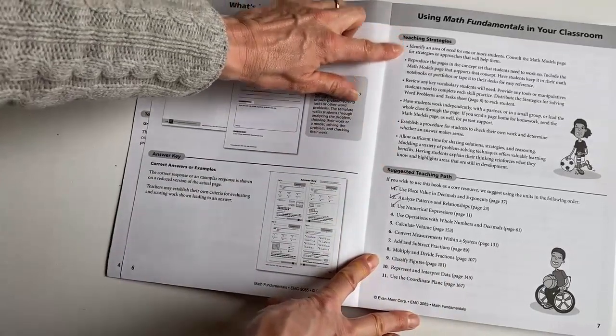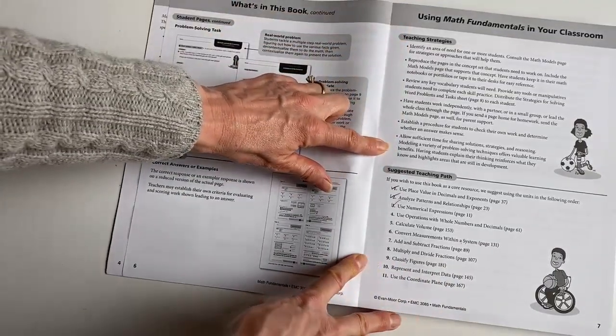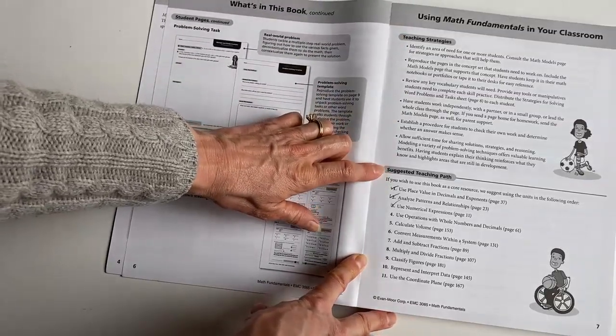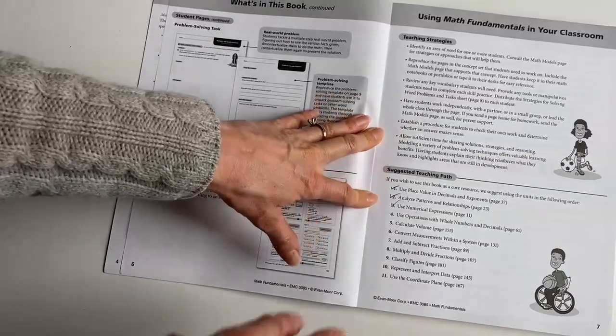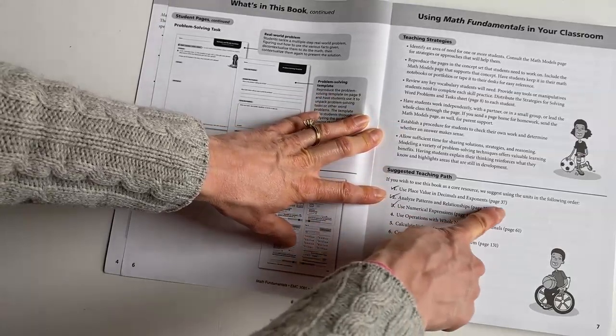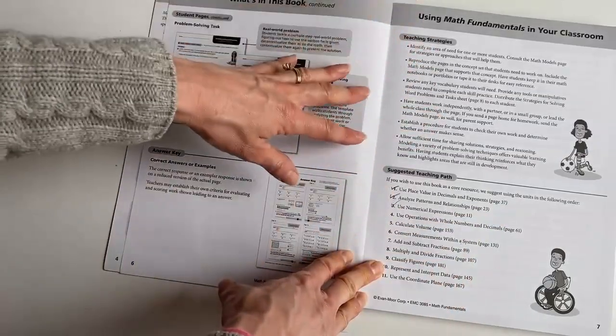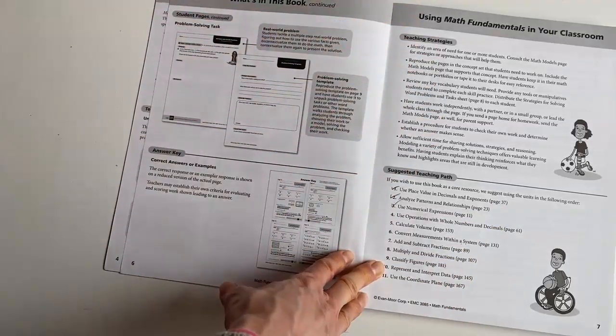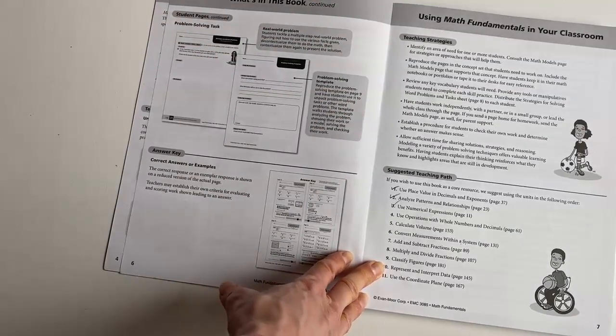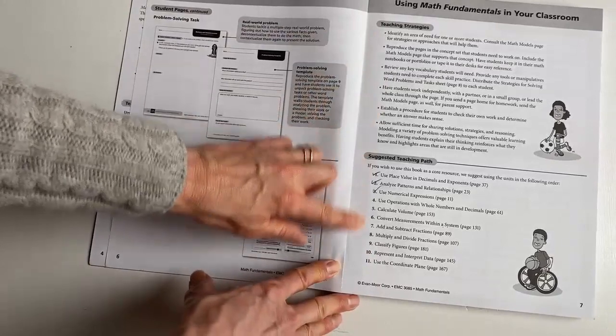Okay, so these are the teaching strategies that you want to focus on helping your child be able to use this book. But here is the suggested teaching path. This is really important. If you're going to use this as your main math curricula, then you want to start on page 37, and then you circle back to page 23. The reason they organized it the way they did was to help classroom teachers to coordinate with the state standards that they have to follow. But it's a really easy way for us to just adapt to use this suggested teaching path.